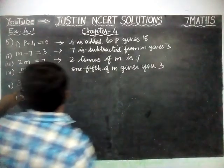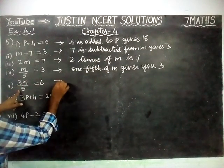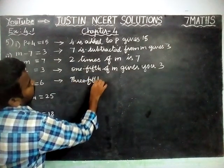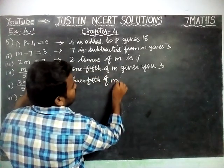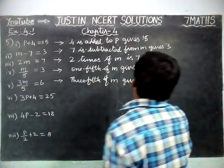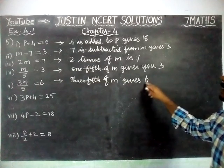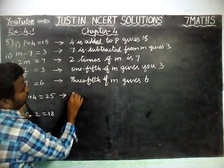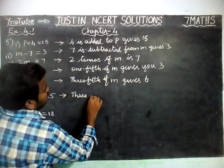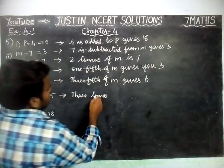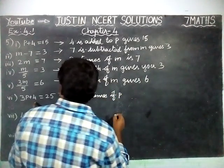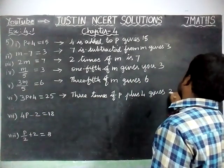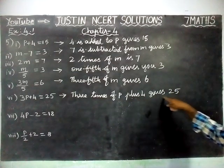Next one: 3M divided by 5 is equal to 6. We can write this as 3/5th of M gives 6. Also, 3 times of P plus 4 gives 25. And 4/5th of M is equal to 5.